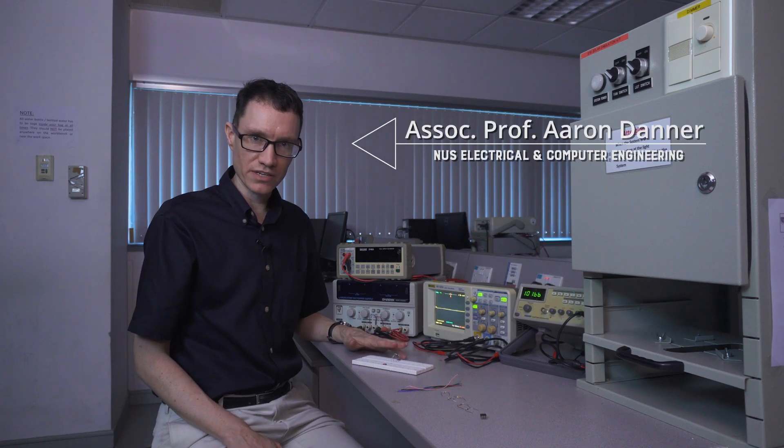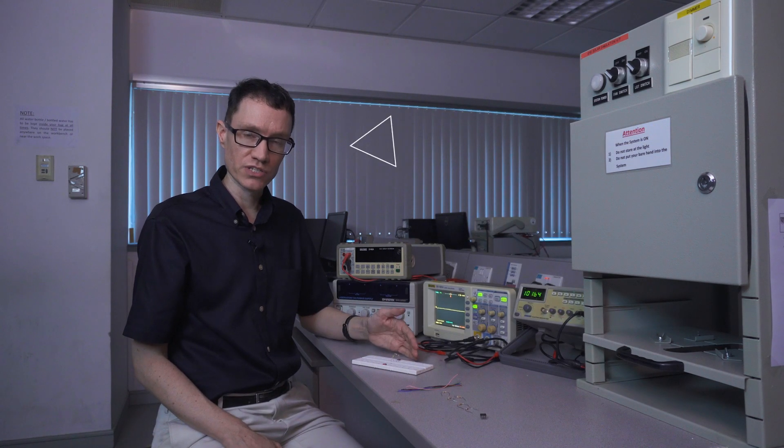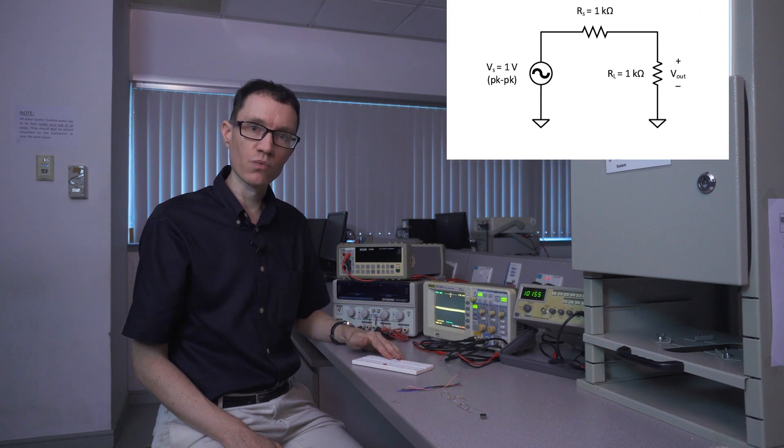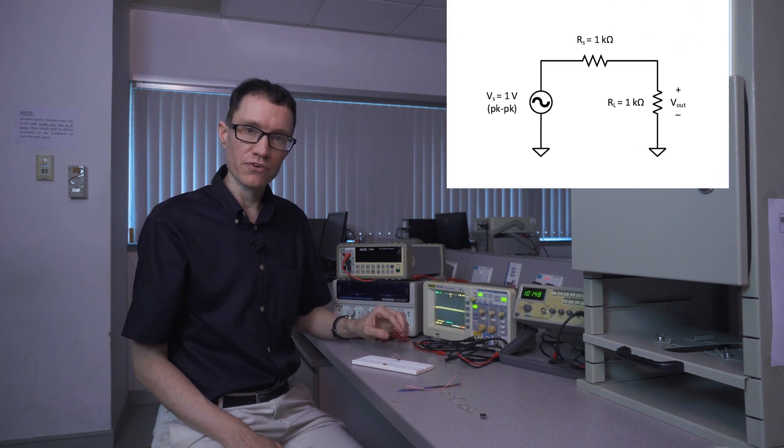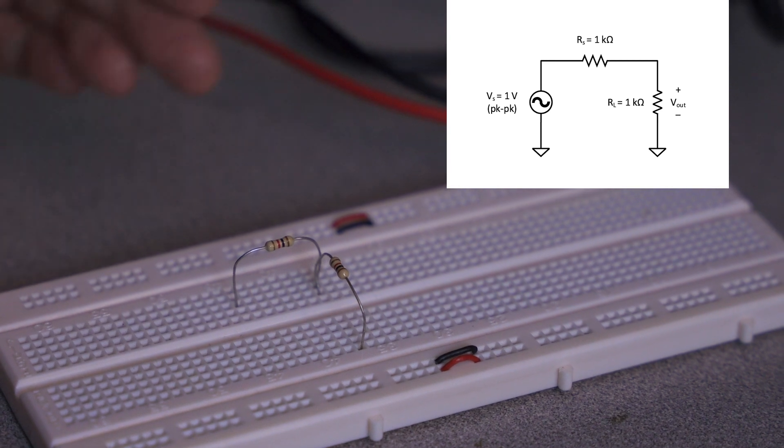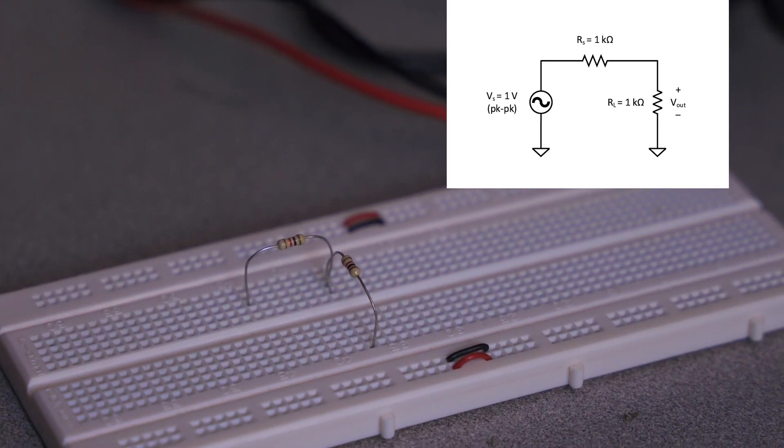I've put together a simple circuit here consisting of just two resistors. Both of these resistors are 1 kiloohm resistors. The first resistor represents the source impedance and the other resistor represents the load.